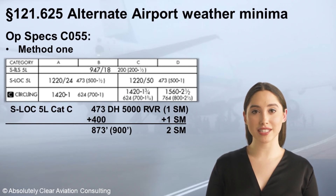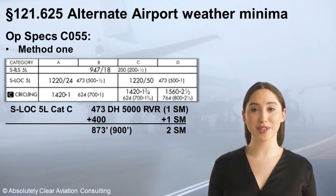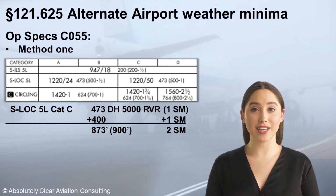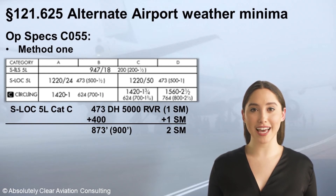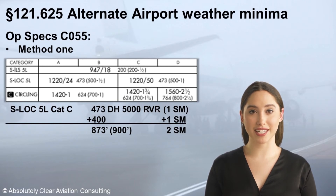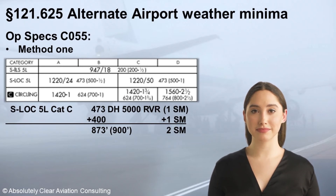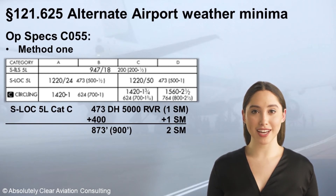If runway 5L is the only suitable runway and the glide slope is out of service, the following calculations will apply for aircraft in approach speed category C. For a decision height of 473 feet, the addition of 400 feet results in a minimum ceiling of 873. However, since ceiling heights are only reported and forecast in 100-foot increments, this must be rounded up to the next nearest 100, so 900 feet becomes the minimum ceiling. The published minimum visibility of 5000 RVR is comparable to 1 statute mile, so the resulting minimum visibility is 2 statute miles.